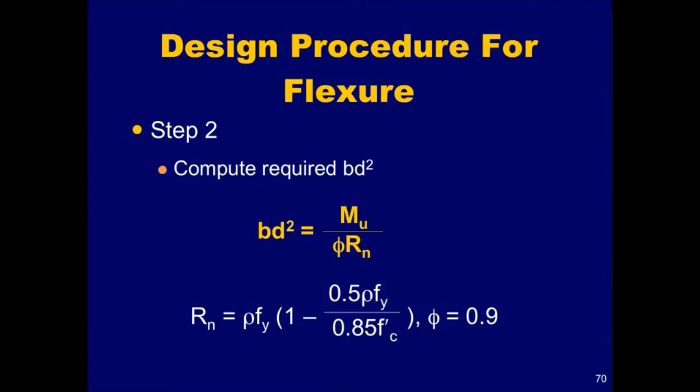The beam dimensions determined from this maximum bending moment should then be used for all spans, which will result in economical formwork. The amount of flexural reinforcement can be varied along the span lengths based on the factored moments at these locations. This is the most economical way to design such members.